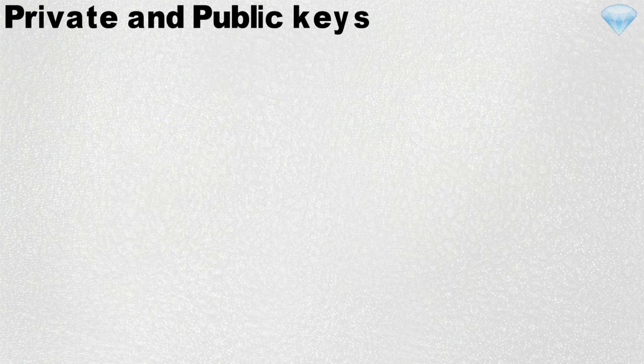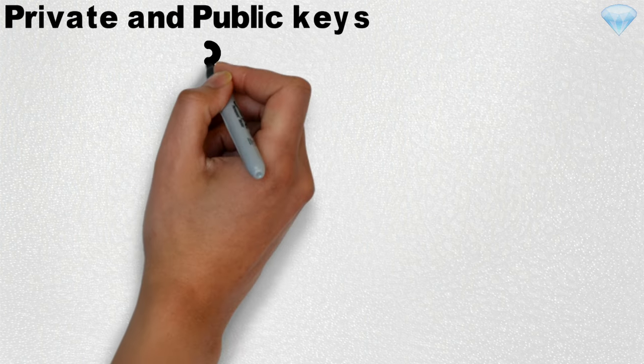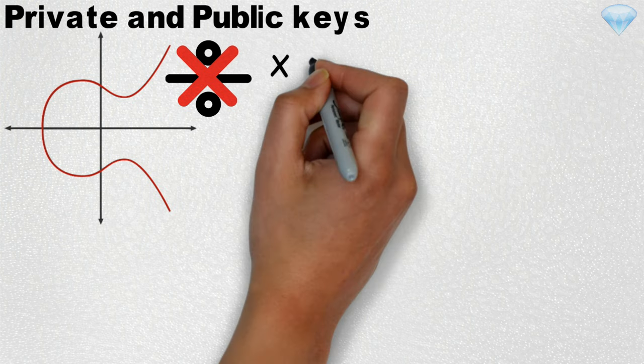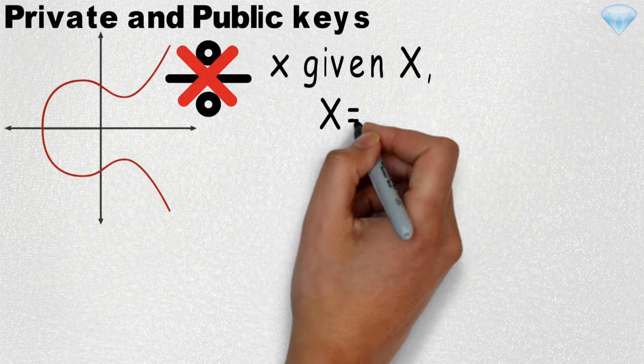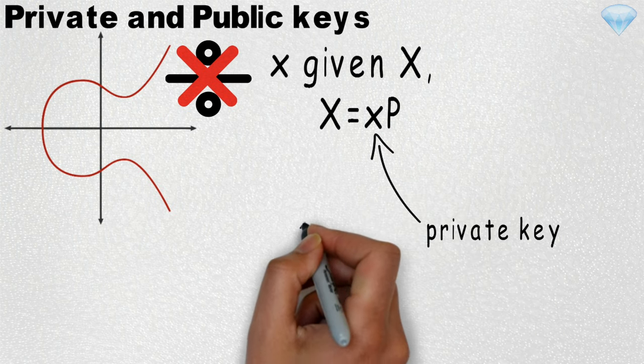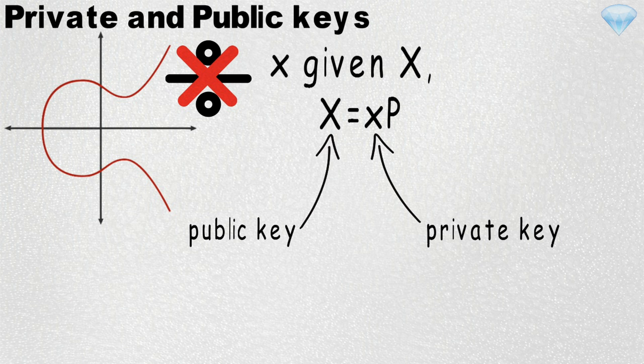Private and public keys. Since division does not exist in elliptic curve cryptography, you cannot figure out small x given large X, where large X equals small x times P. It is convenient to make small x your private key and large X your public key. Your private key would then be a random 256-bit integer, and your public key would be the x and y coordinates of the point on the elliptic curve. This satisfies the property that it is computationally impossible to derive the private key from the given public key.